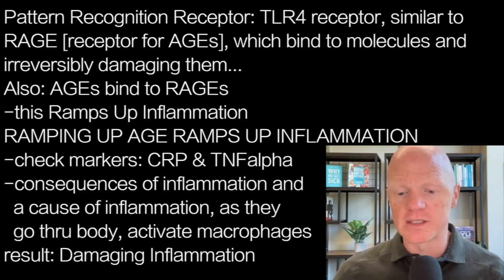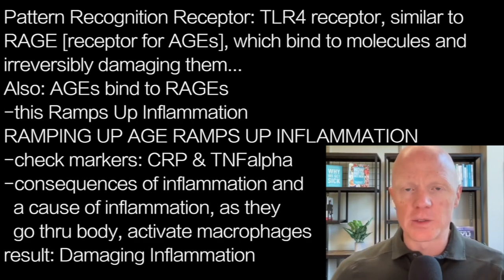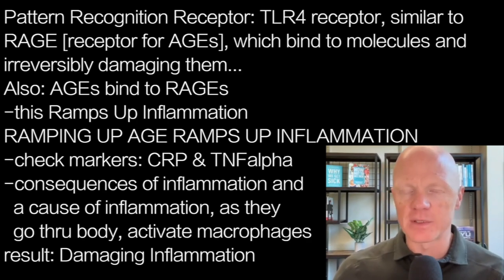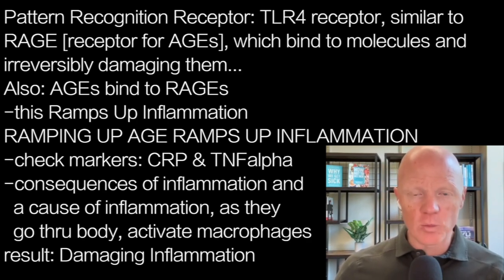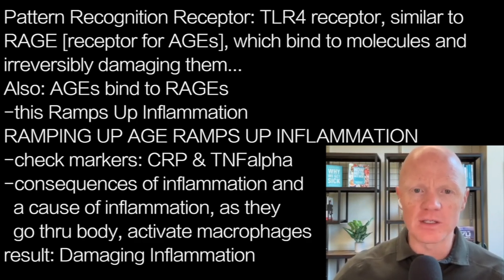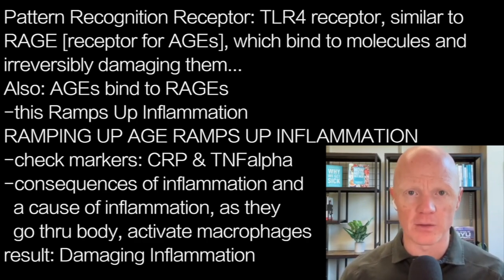As much as I just described the formation and consequence of advanced glycation end products, or AGEs, and them binding to molecules and irreversibly damaging them, you also have this phenomenon wherein AGEs binding to RAGE. And when RAGE is activated, it ramps up inflammation. So anytime you increase AGE formation, you are promoting a pro-inflammatory environment or milieu within the body at large.